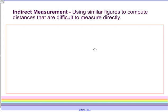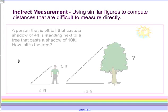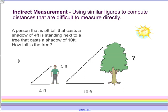For example, I have a problem right here. It says a person that is 5 feet tall that casts a shadow of 4 feet, just like this guy. We've got a guy that's 5 feet tall and he casts a shadow of 4 feet standing next to a tree that casts a shadow of 10 feet. How tall is the tree?